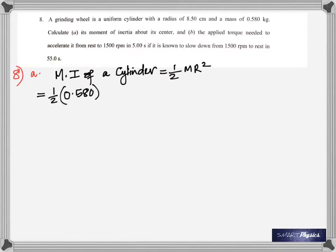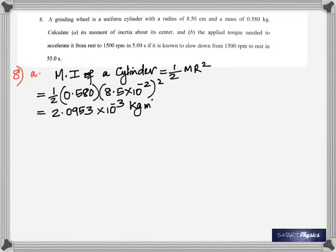The moment of inertia of the cylinder is ½MR². Mass is given and the radius is given in centimeters — convert to meters. Moment of inertia values are typically very small quantities, as you can see from the result in units of times 10⁻³ kilogram·meter squared.